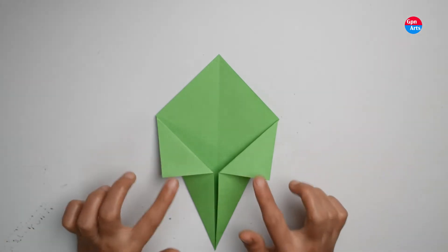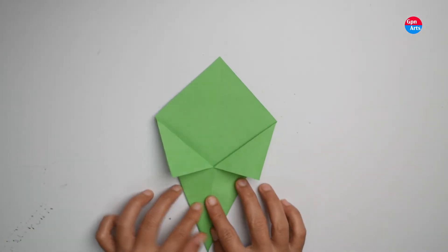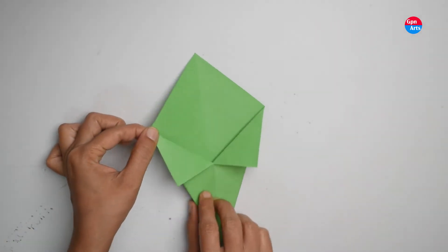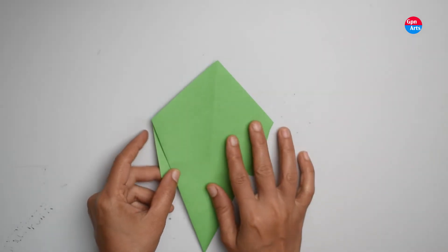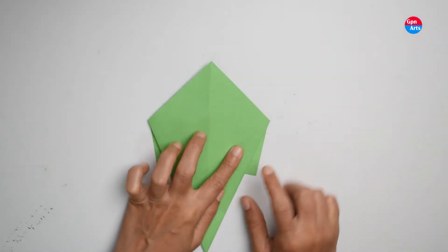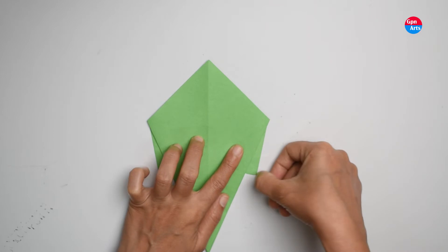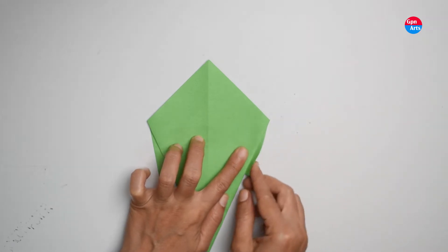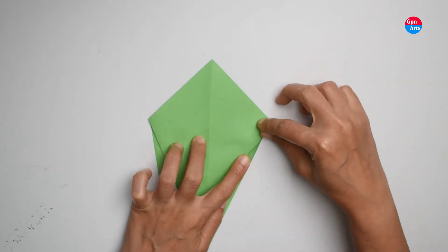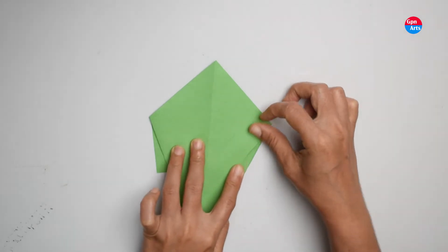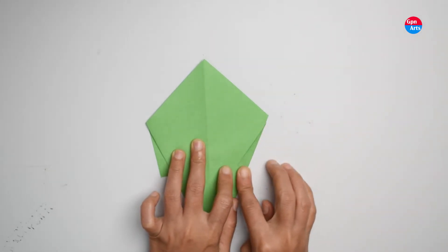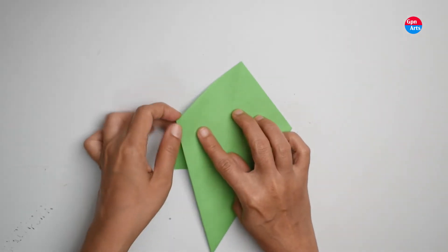Now turn the paper. Here we see one small triangle, so fold that triangle over this cone. Same with the other side.